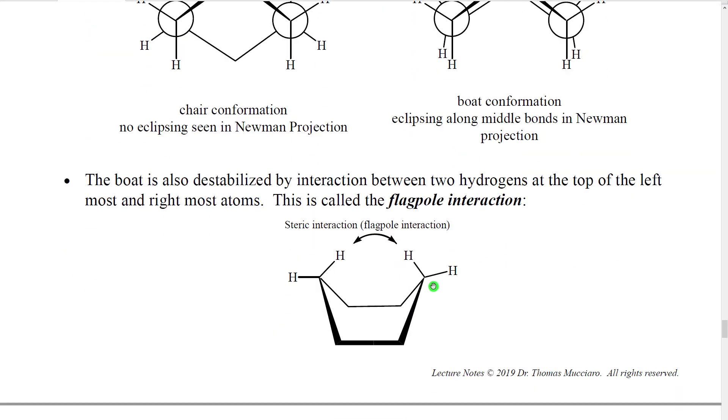The boat also has a problem because these hydrogens here, as we fold these things toward each other, they begin to hit each other. We call this the flagpole interaction. It's a steric interaction and it raises the potential energy.